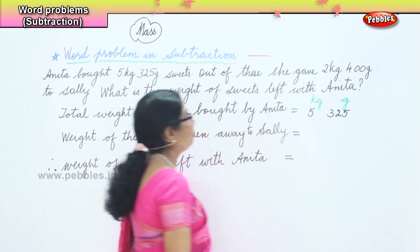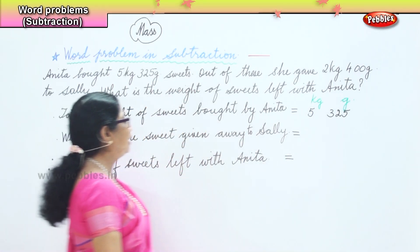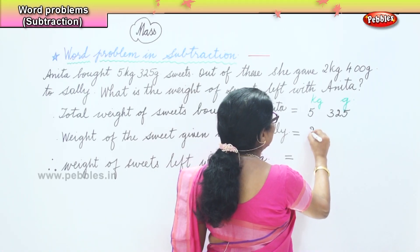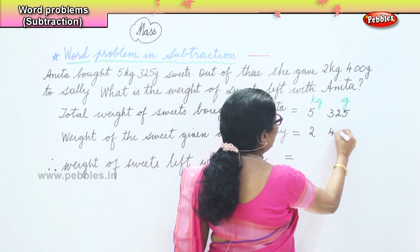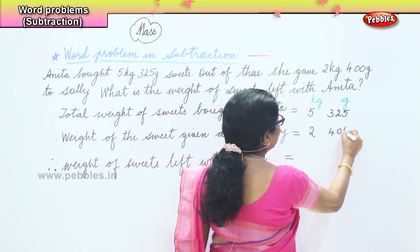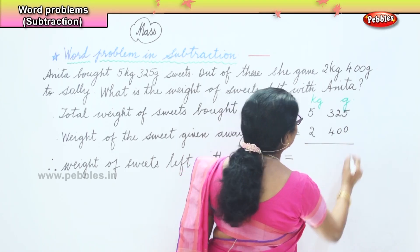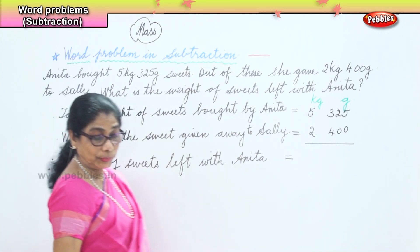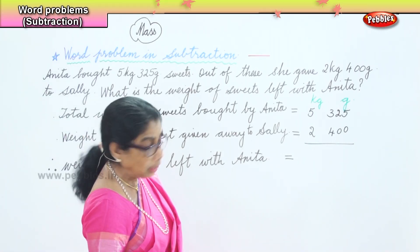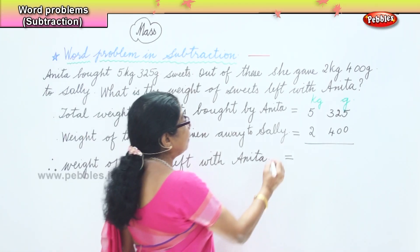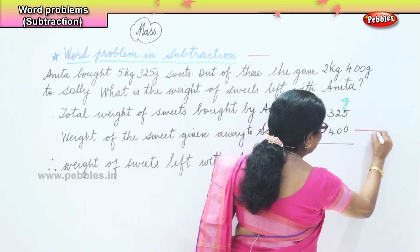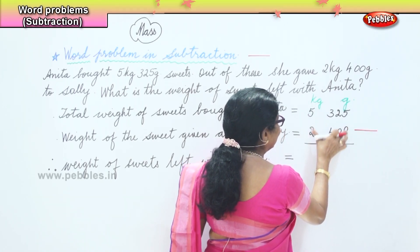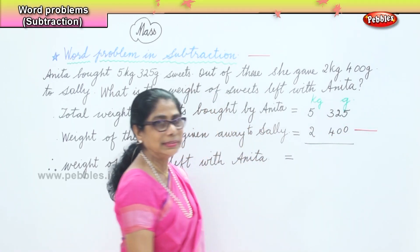The weight of sweets given away to Sally is 2 kg 400 grams. Now for the weight of sweets left with Anita, from the total we take away 2 kg 400 grams given away, and that will give us the answer.